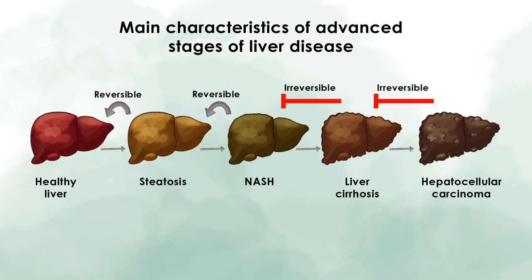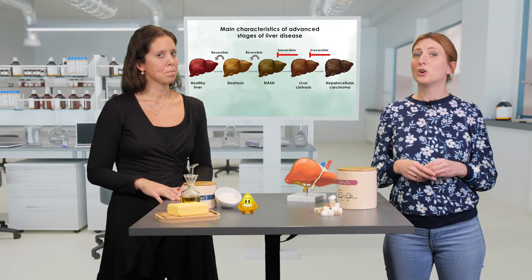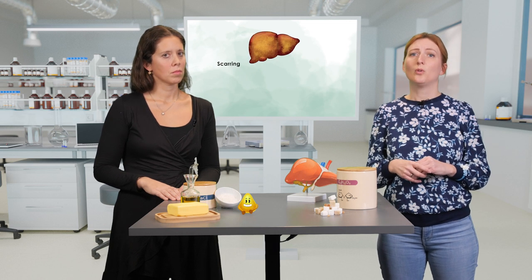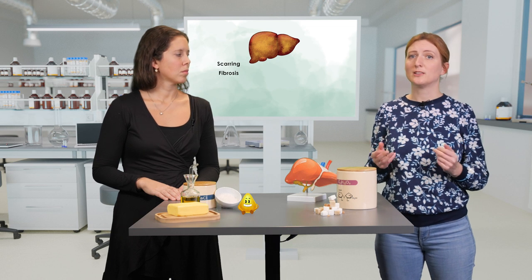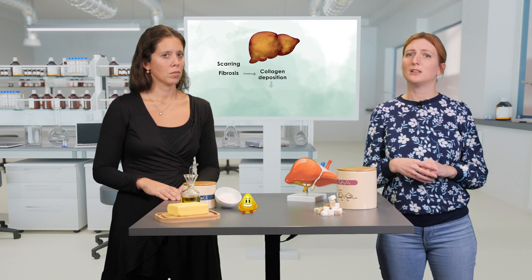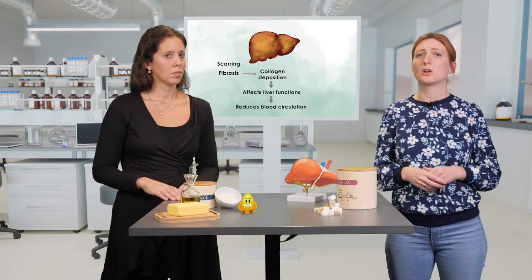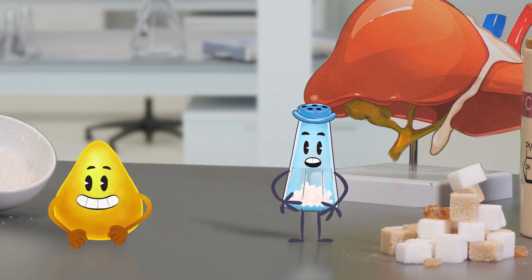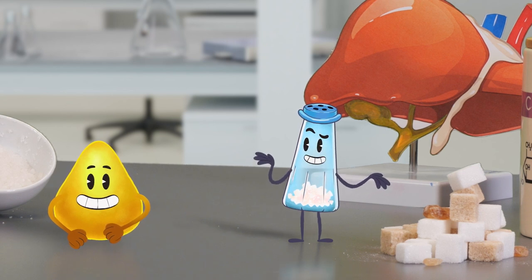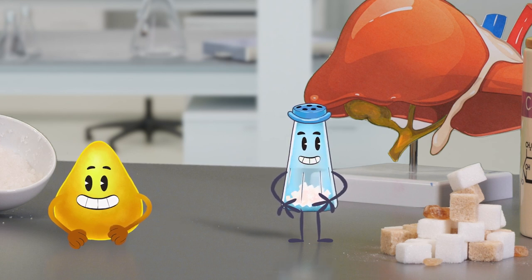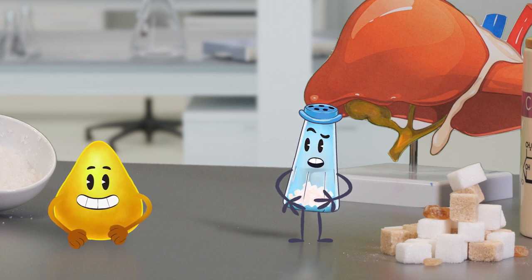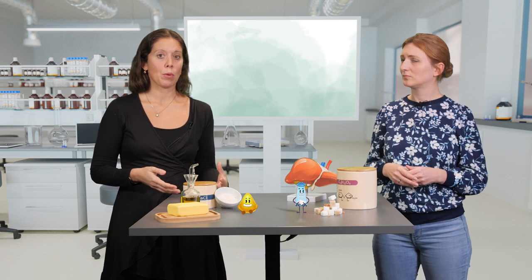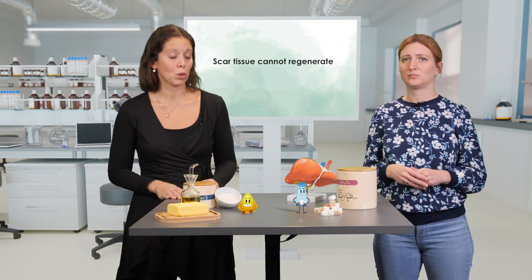We already talked about steatosis and NASH, but what are the main characteristics of the more advanced stages of liver disease? Untreated NASH or liver inflammation can lead to scarring of the liver, or fibrosis, which is characterized by collagen deposition. This can already affect liver function because it restricts blood circulation across the organ. While the liver is the only organ with the capacity to regenerate, once healthy hepatocytes are replaced by scar tissue, those parts of the liver are no longer able to regenerate.